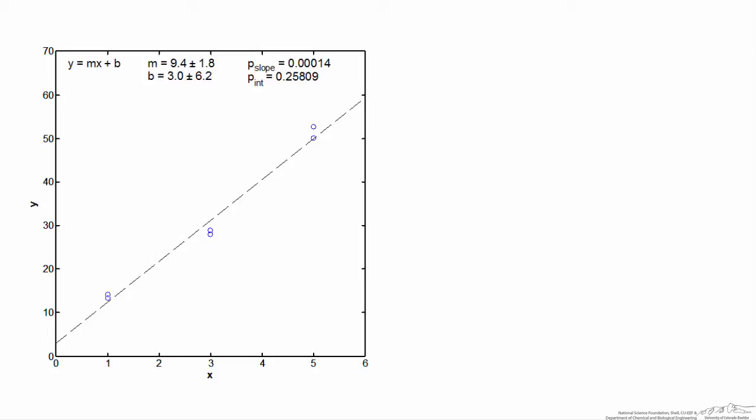What I've generated here are some simulated data. I've collected two simulated data points at x equals 1, 3, and 5, and fit a line to it using least squares regression. One of the questions we want to figure out is whether or not there truly is a y-intercept at x equals 0. With the least squares fit we would see an intercept — in this case we're getting a fit intercept of 3 — but the question is: is that significant?